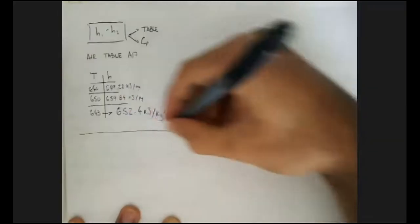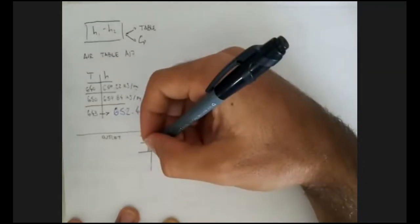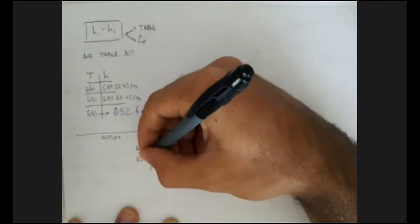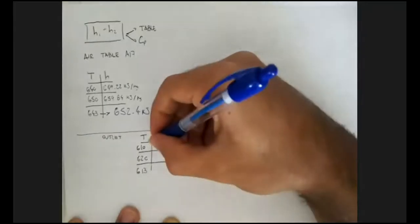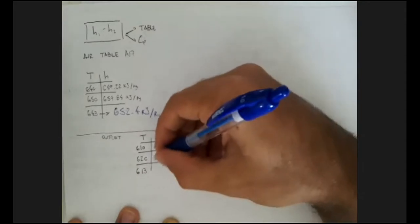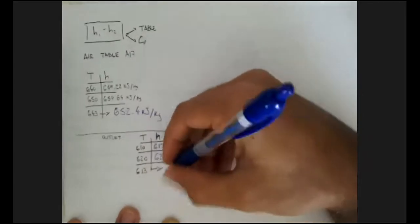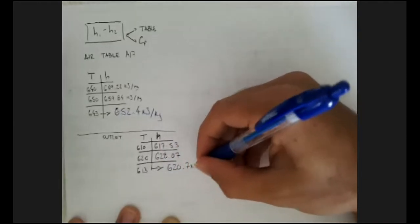For the outlet at 613 K, the value falls between 610 K (h = 617.53 kJ/kg) and 620 K (h = 628.07 kJ/kg). Interpolating gives h2 = 620.7 kJ/kg.